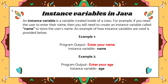Instance variables are normally created inside of your class. What exactly is an instance variable in Java? For example, if you need the user to enter their name, you would create an instance variable called 'name' to store it. Or if you ask the user for their age, you create a variable to store the user's age. That's what we call instance variables when you keep those variables inside of the class of your program.